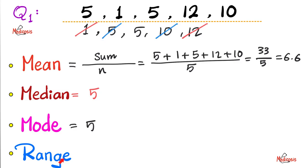How about the range? The range is basically the maximum value minus the minimum value. And what's the maximum number here? Well, the greatest number is 12. And what is the smallest number here? It is 1. 12 minus 1 is 11. And this is the range.